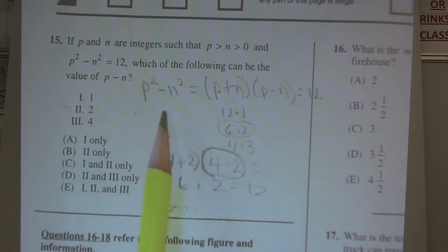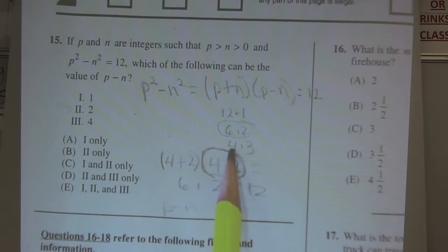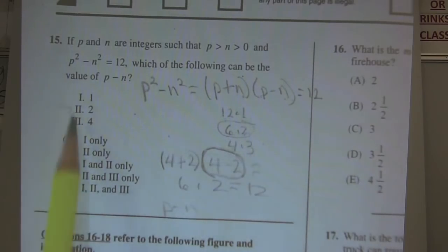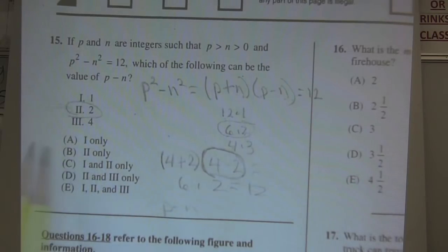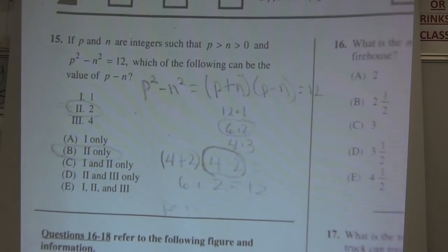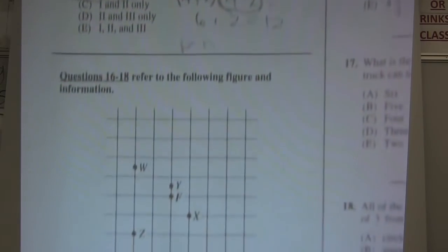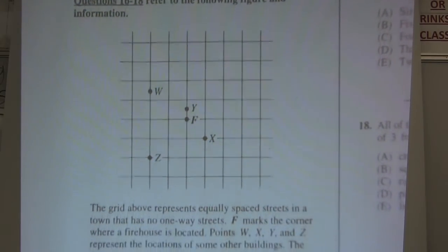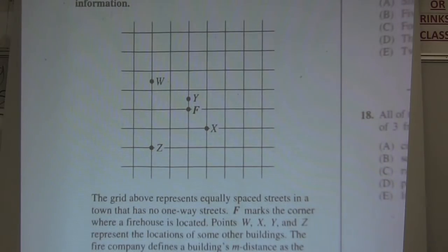Are there any two numbers that I can add together to get 4 and then subtract the same two numbers to get 3? I can't think of any. It's this one only, so that would get me choice B. Okay, here is a graph right here for questions 16 through 18.